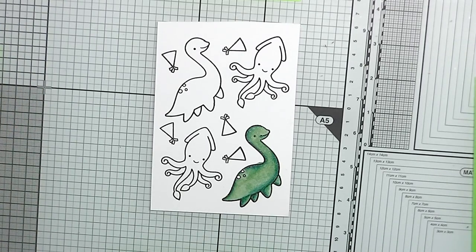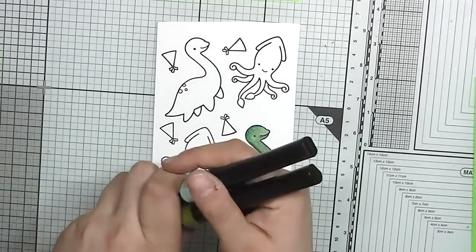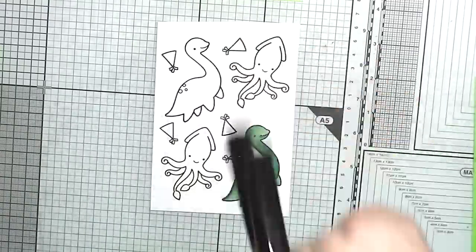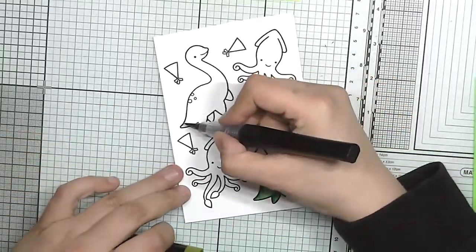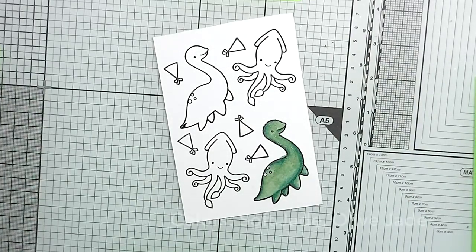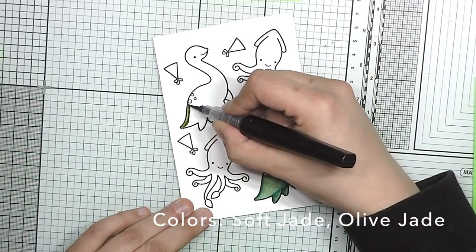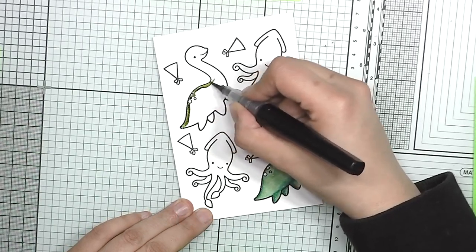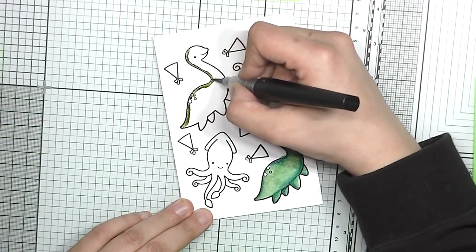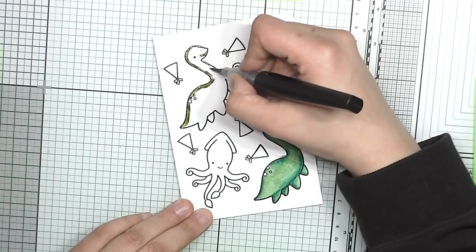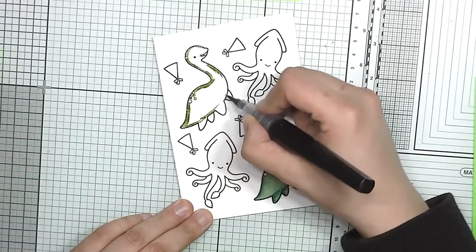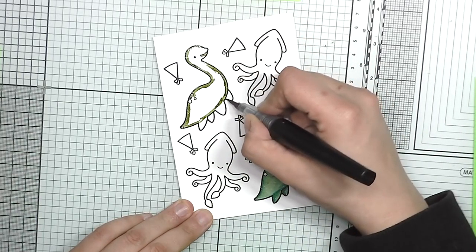And these pens, they are water based. Here you can see I have a little too much ink. When you start them, you have to shake them really well and remove a seal and screw them together, and then you have to squeeze the barrel to make the color come out.